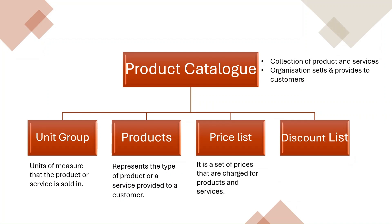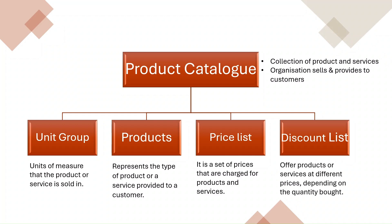A price list is a set of prices that are charged for products and services under specific circumstances. For example, a fitness center has a different price list based on membership tiers and season. Lastly, we have a discount list which lets an organization offer products or services at different prices depending on the quantity bought. A wholesale inventory supplier offers a bulk discount based on purchase quantity — for example, purchasing 50 notebooks costs $1.50 each, while purchasing 200 notebooks brings the price down to $1.20 each.